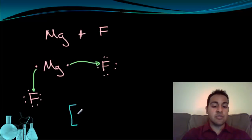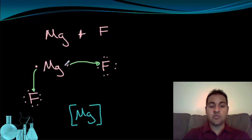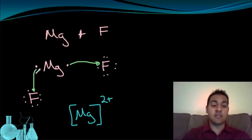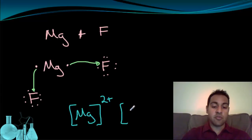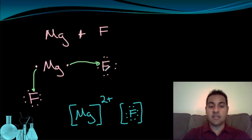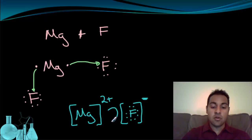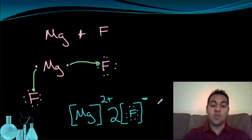I'm doing Mg first because that's the positive ion — the cation always comes first. Magnesium lost two electrons, so it's going to have a positive two charge, and I'm not going to draw any dots around it because it lost both of its original valence electrons. Next, I represent fluorine in brackets with eight valence electron dots, since it gained one to have the full eight, and it has a negative one charge. But there are two fluorines, so I represent that by putting a large 2 in front of the bracket. This tells us that for every magnesium ion in magnesium fluoride, there are two negative fluorine ions, and the crystal structure of this substance would reflect that ratio.